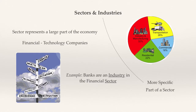The existence of sectors and industries is important to know, as they frequently all move together in terms of stock price. An event in the economy can affect an entire industry. For example, if there were higher gas prices, the profits of transportation companies would fall, thus causing the company stock price to plummet.